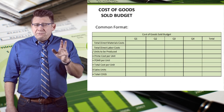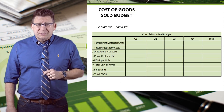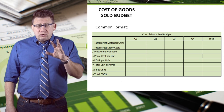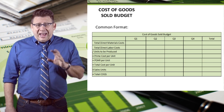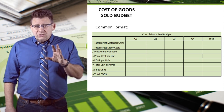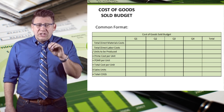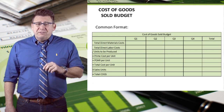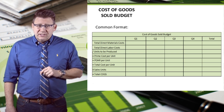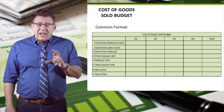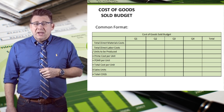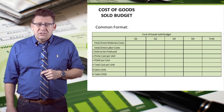One format to determine the cost of goods sold is to take direct materials and direct labor costs, add those, and divide by units produced. Then add manufacturing overhead to that to arrive at a cost per unit. Then multiply that by budgeted sales volume to arrive at cost of goods sold.